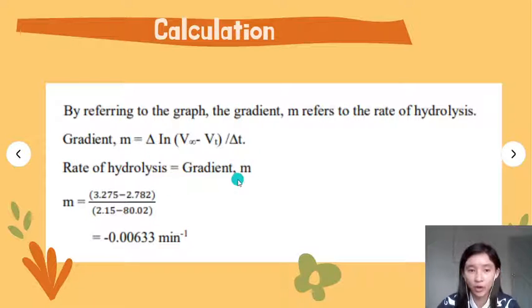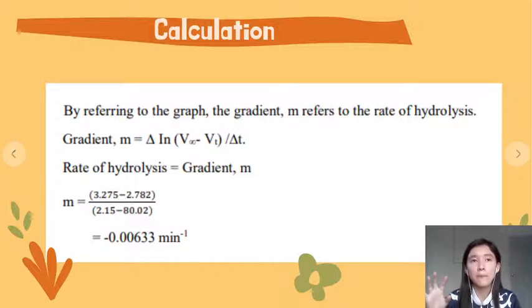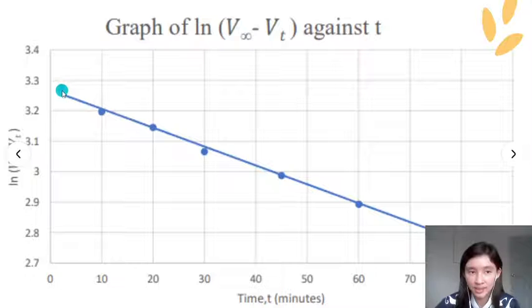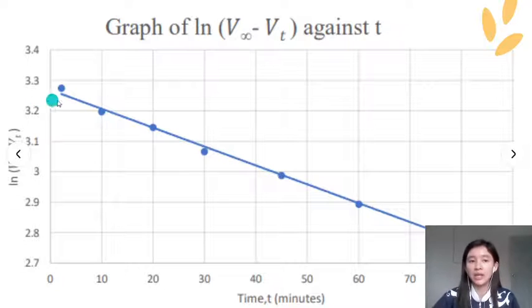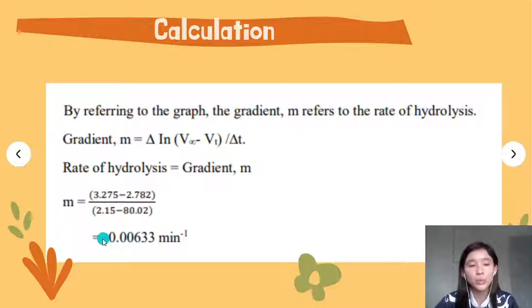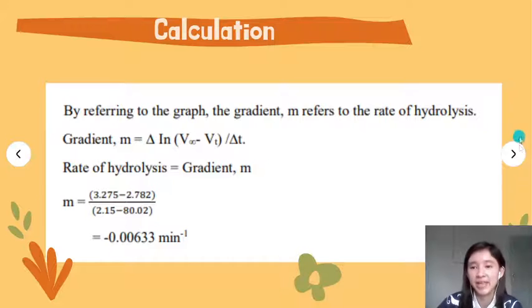The gradient is the rate constant. How to find the gradient in the graph? Y-axis over x-axis. Take the y-axis point here and the y-axis point here, then we subtract. Also take the x-axis here and the x-axis here, then we subtract. We will get a result of -0.00633, which is our gradient.